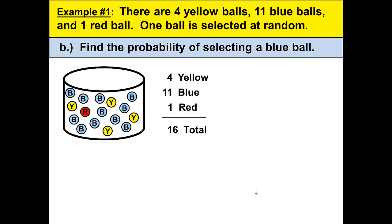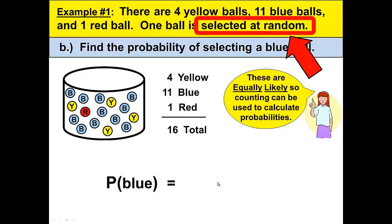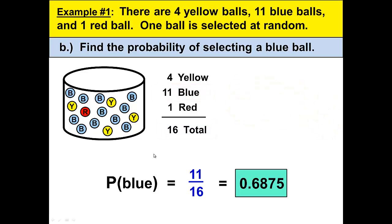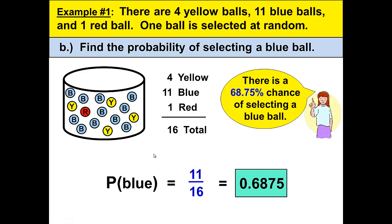Let's look at B. Find the probability of selecting a blue ball. Again, the probability of blue is, again because we're selecting it at random, and these are equally likely, so all I have to do is count to calculate the probabilities. There are 11 out of 16, so that's 11 over 16. I could leave it in fraction form or I will divide it out. You'll just take your calculator and divide 11 divided by 16 and get .6875. And that's the same as saying that there's a 68.75% chance of selecting a blue ball.